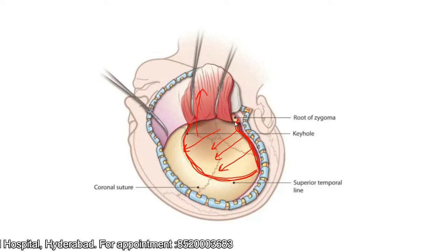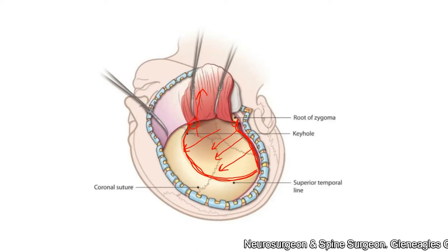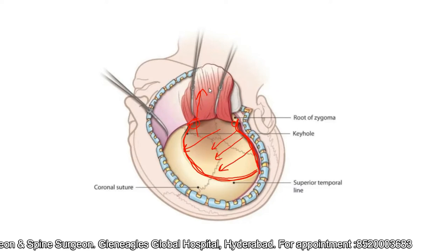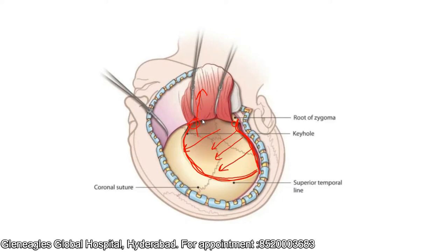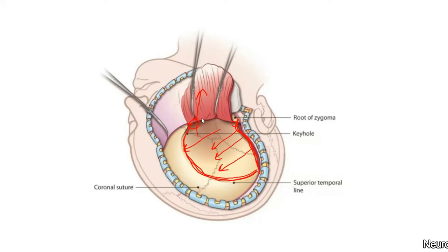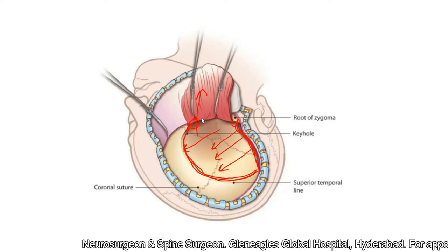Ensure that you are exposing the root of the zygoma here and the anterior part of the root of the zygoma — that is the frontal process of the zygoma — where you place the key burr hole. Once you retract the temporalis muscle, in our institute we prefer to take a stitch with one-zero silk and retract it with the help of rubber bands.